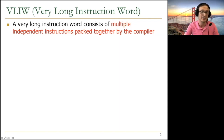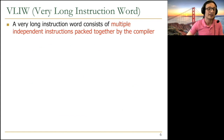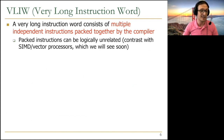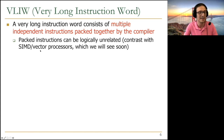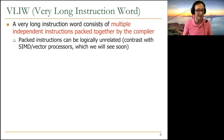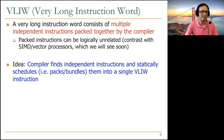Packed instructions can be completely logically unrelated — for example, add, load, move, multiply — different operations including floating point. This contrasts with SIMD and vector processors, which can also do concurrent operations but must perform exactly the same operation on different data elements. VLIW can exploit irregular parallelism between different instructions, whereas SIMD cannot because the same operation must be applied to many data elements.